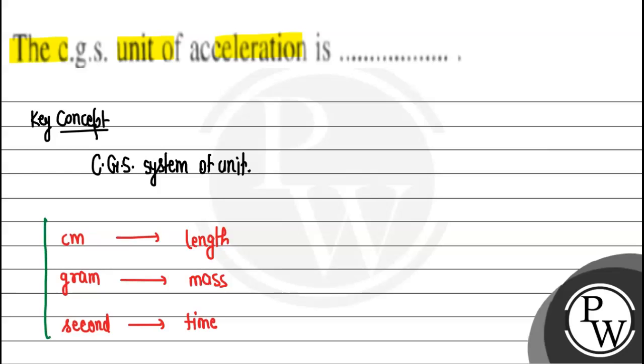Now what about the acceleration? So acceleration formula is what? Acceleration is defined as velocity upon time. Now if we talk about velocity, then velocity is defined as displacement upon time.